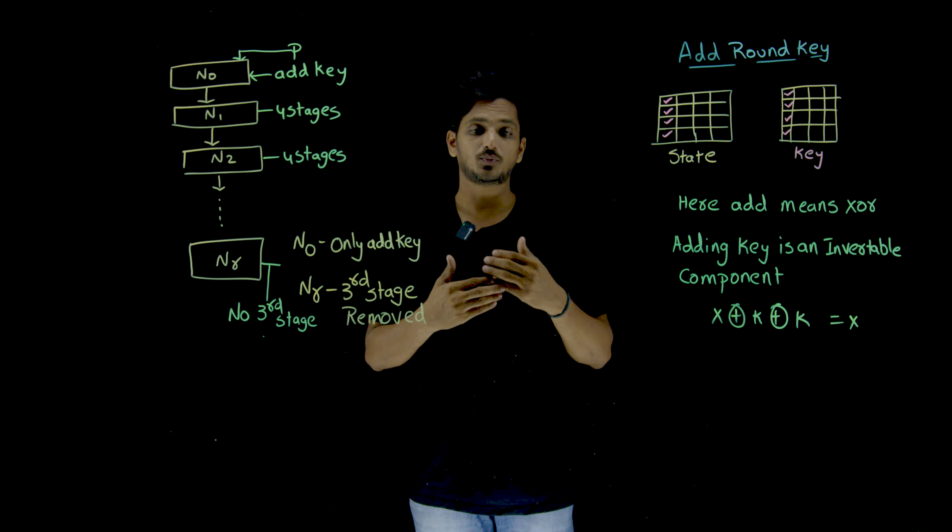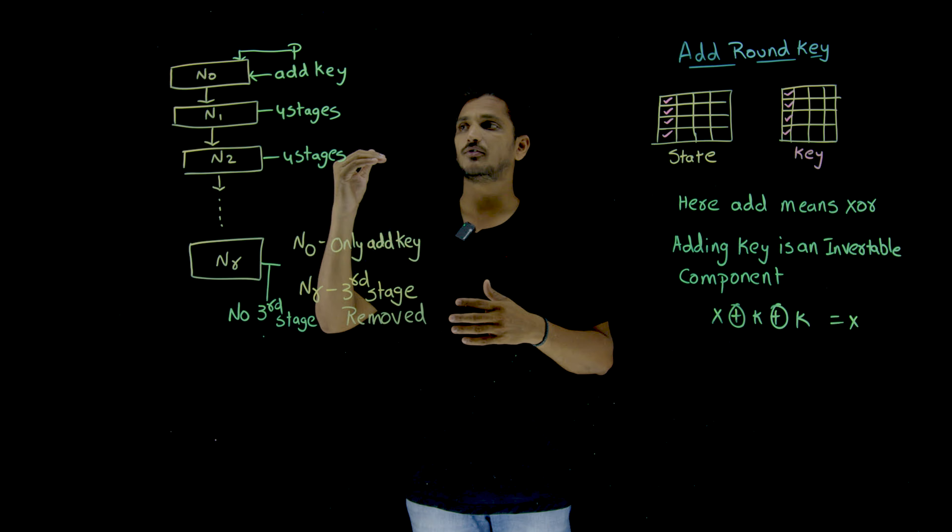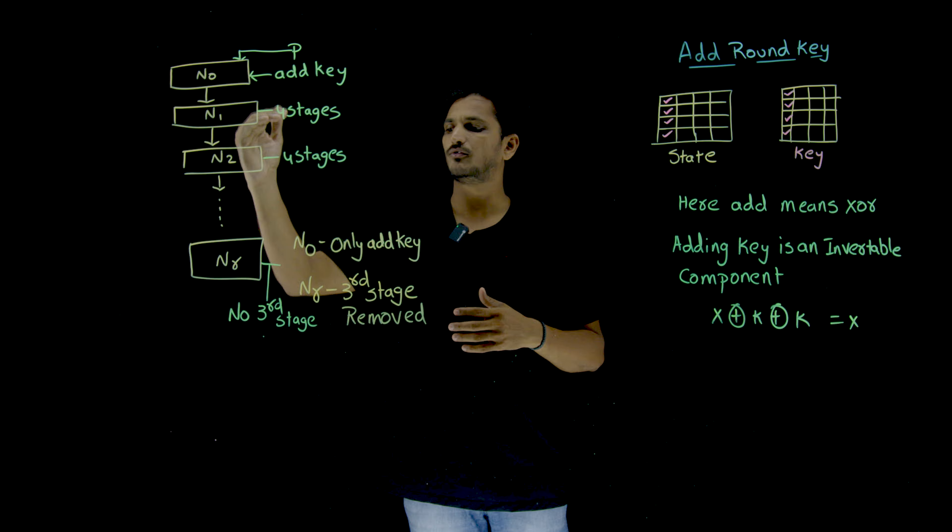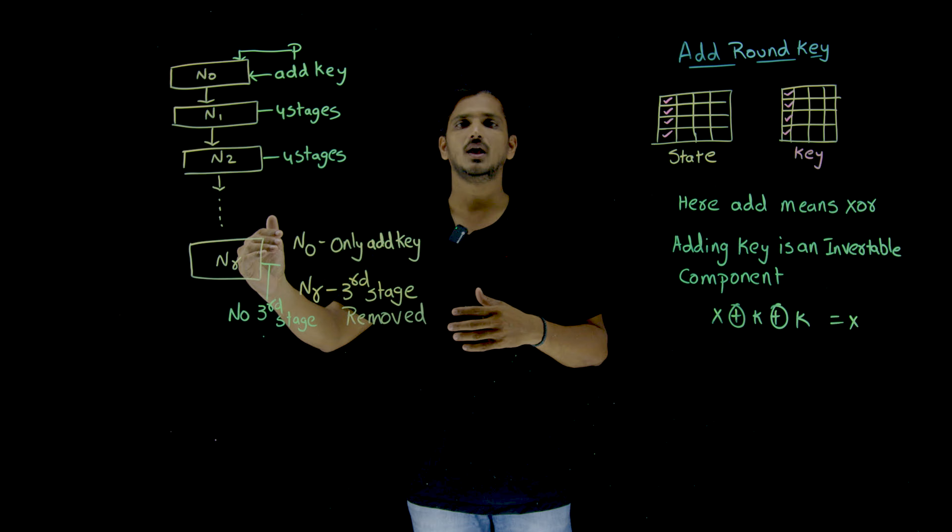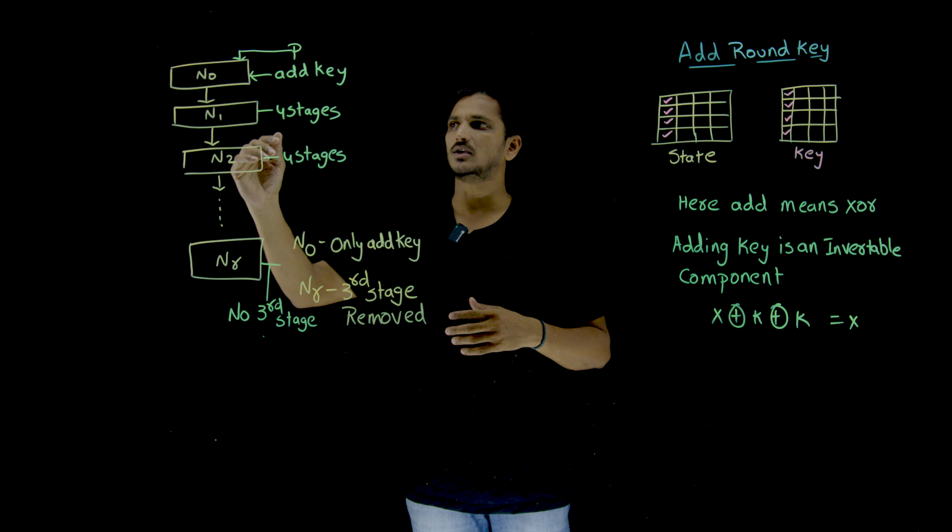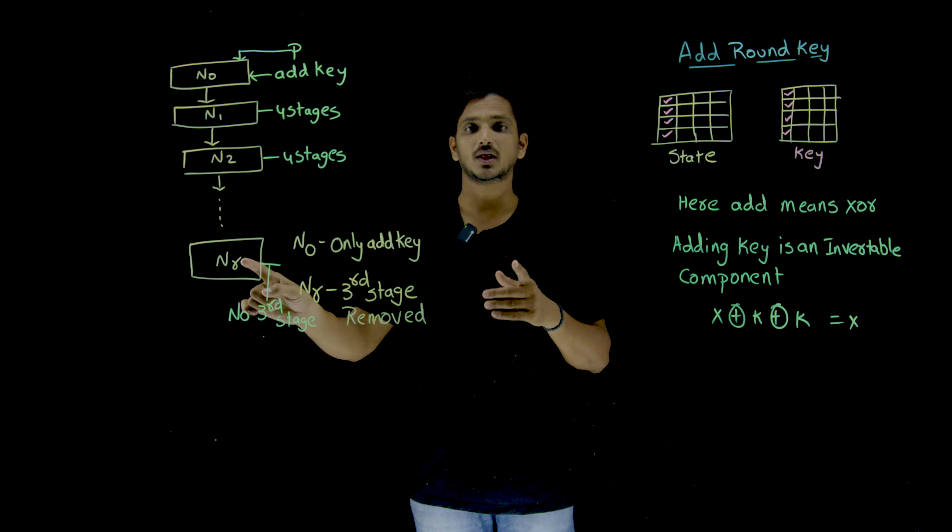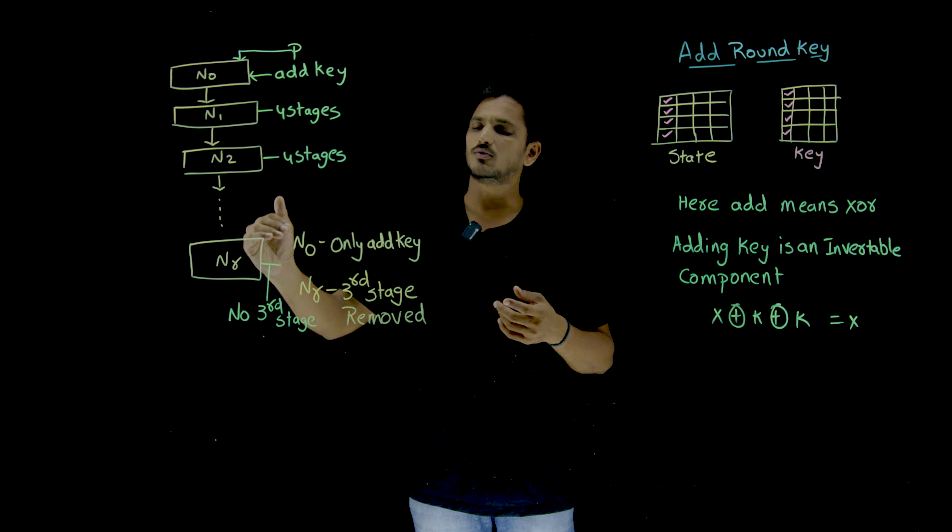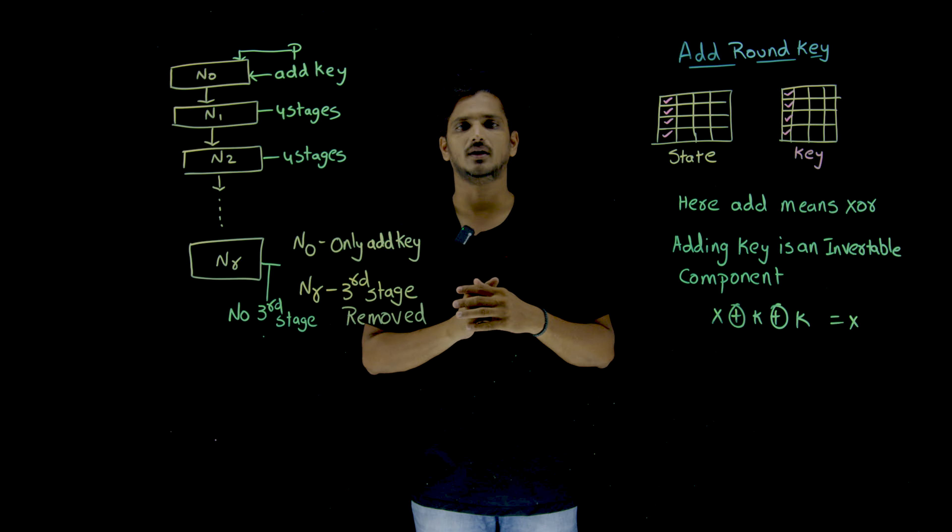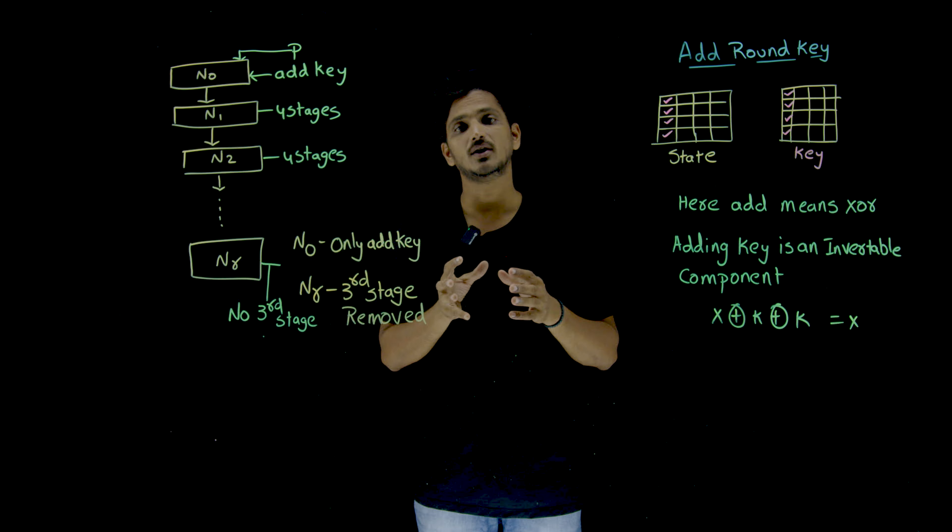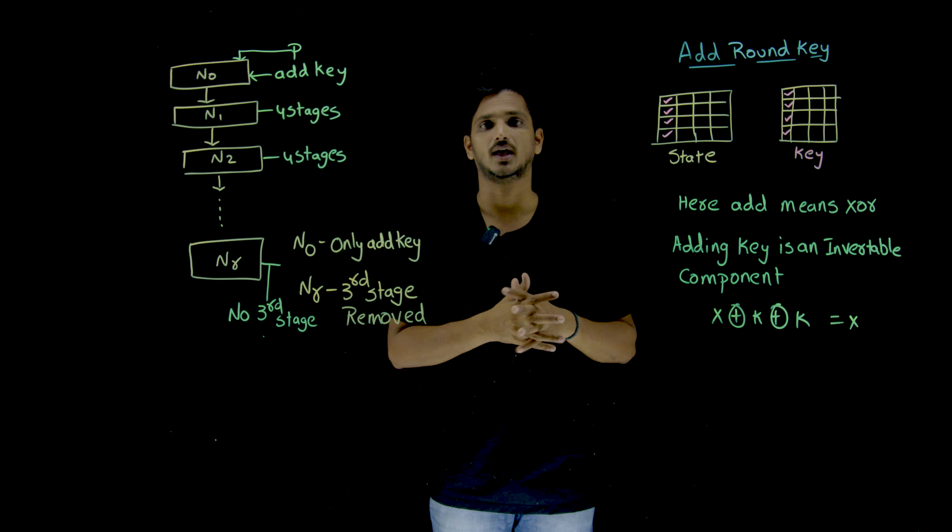So the next point you need to understand here, if you go with 128 bit key, how many keys are generated? 11 keys are generated. Similarly 192 bit key, 12 rounds means 13 keys are generated. How these keys are generated will be discussed in our next class.